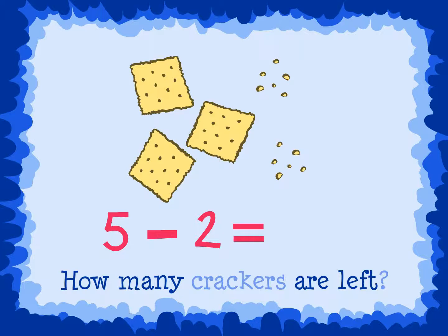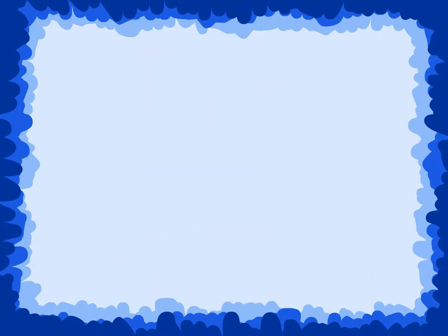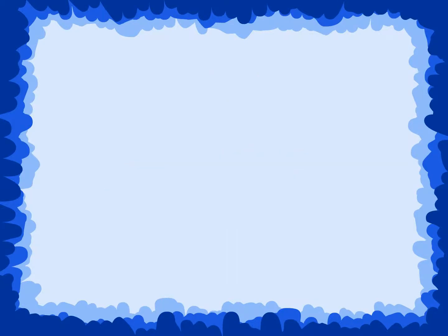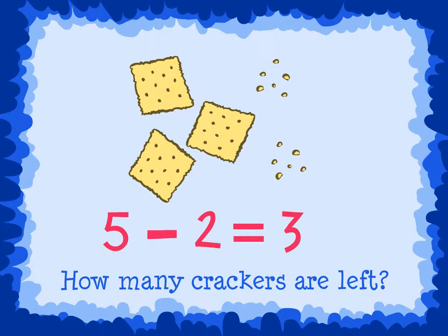We will use the count back strategy. Start at 5 and count back 2: 5, 4, 3. 5 minus 2 equals 3. Step 3: Look back and check your work. Does your work make sense? Did you find out how many crackers Sam had left? Yes, we found out that Sam had three crackers left.